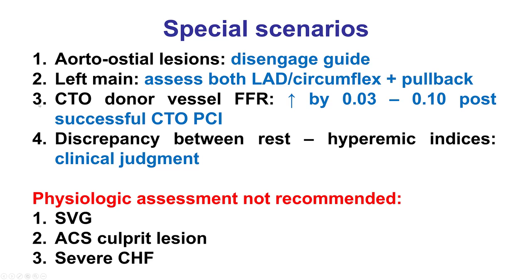Third, CTO donor vessels: these may have a more ischemic FFR because they are also supplying the occluded myocardium. Once the CTO is fixed, FFR increases by 0.03 to 0.10. Therefore, to best assess the severity of the CTO donor vessel, it may be preferable to first re-canalize the CTO and then perform assessment of the donor vessel.